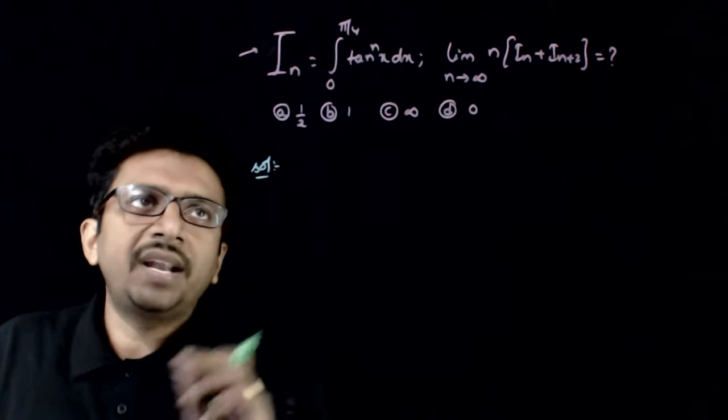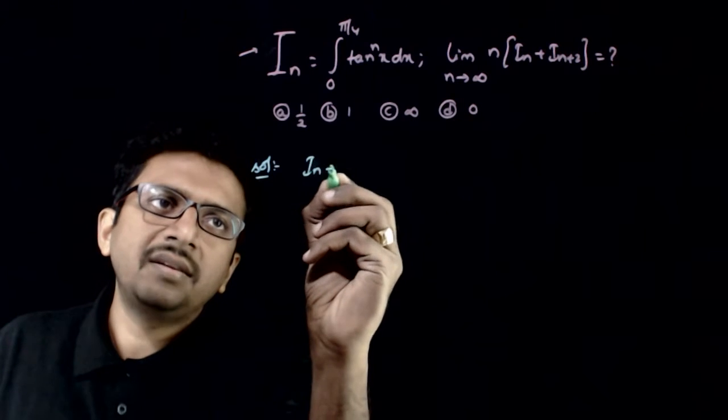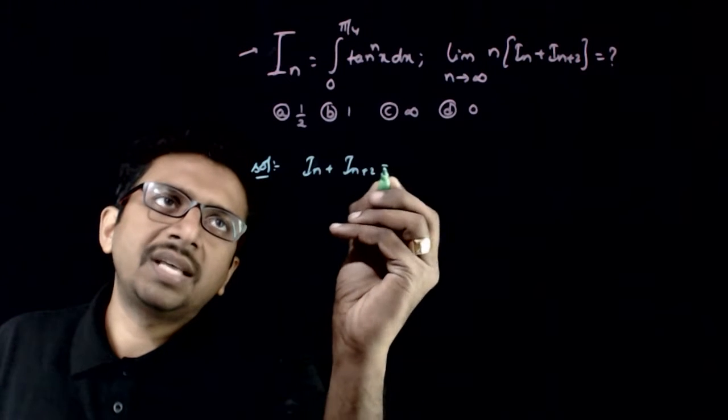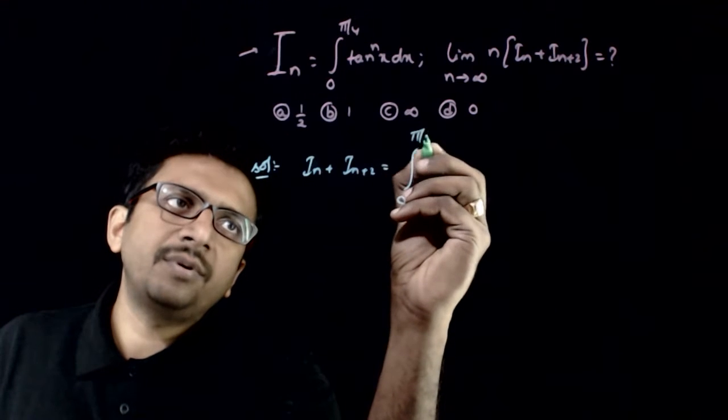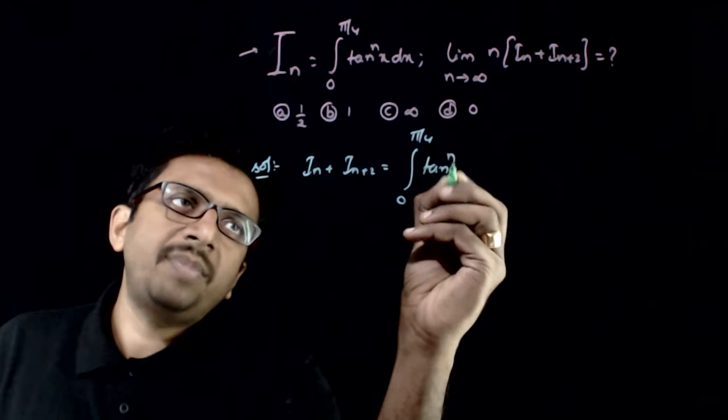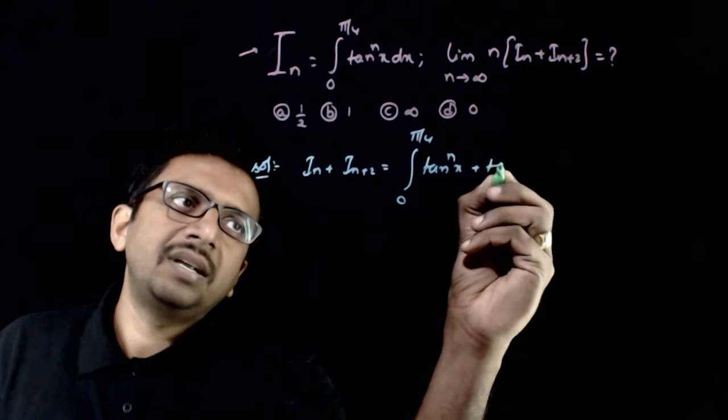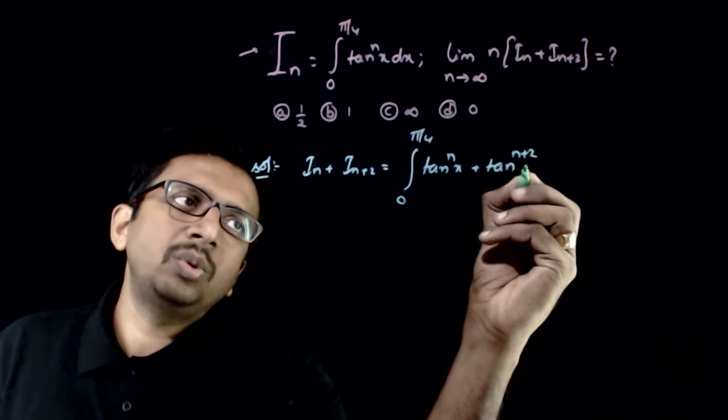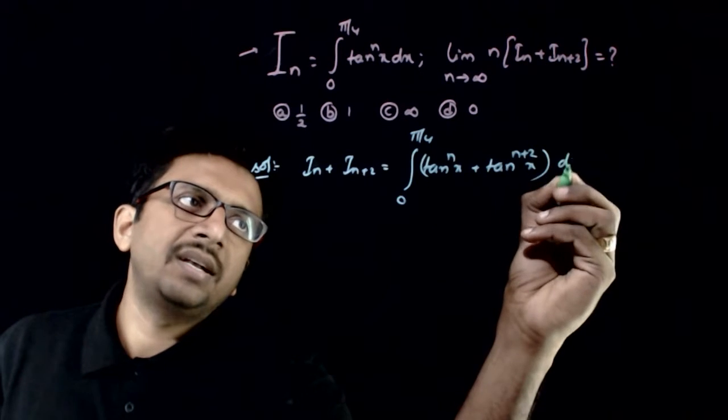So first let us try to find I_n plus I_(n+2). I_n plus I_(n+2) is nothing but the integration from 0 to pi by 4 of tan to the power nx plus tan to the power n plus 2x dx.